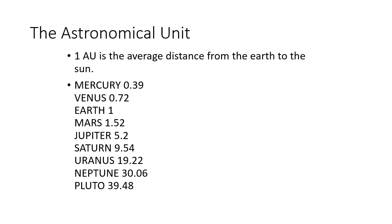You'll be given this planetary distance data whenever you need it for tests and exams. Even though we now know absolute distances in kilometres and metres, the astronomical unit is still a useful one to use. Earth is about 150 million kilometres away from the Sun, and if we were dealing with distances in metres we'd be working with really big numbers — so the astronomical unit is just a convenient unit for distances within the solar system.